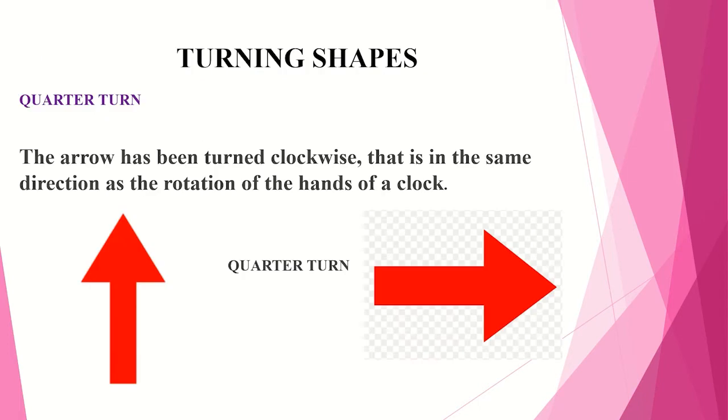The next concept we are going to see is turning of shapes. Turning of shapes consists of two: quarter turn and half a turn. This quarter turn and half a turn concept we can relate with fractions. In the fraction chapter you all knew that quarter is 1 by 4 and half is 1 by 2.